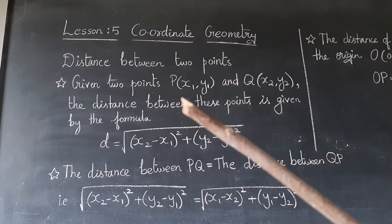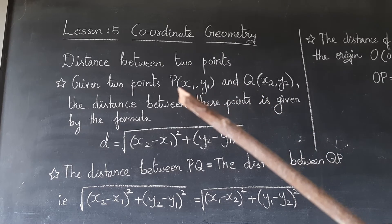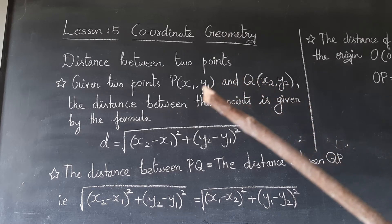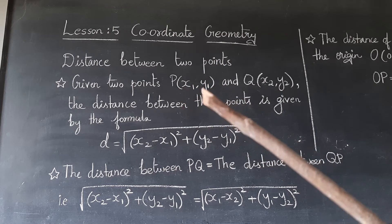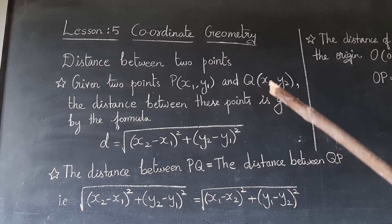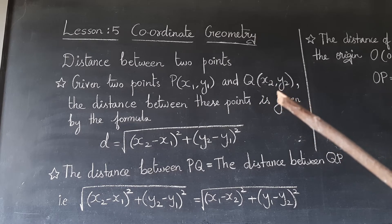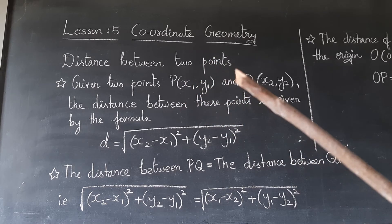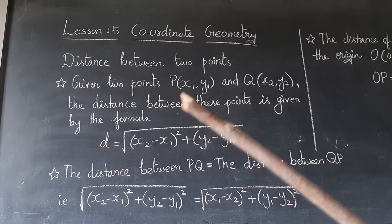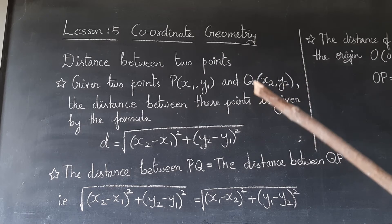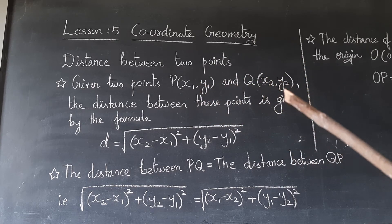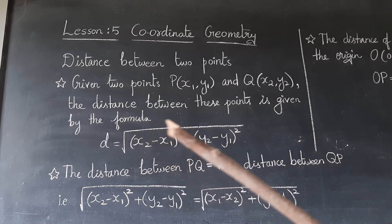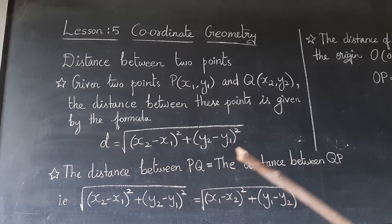The second point we represent as Q with coordinates (x2, y2). So x1, y1 represents the first point (1, 1) and x2, y2 represents the second point (2, 2). Note: don't repeat — it's x and y for each point. The distance between these two points is given by a formula.